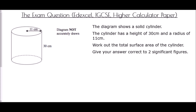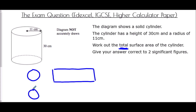We finish with an exam question from the Edexcel iGCSE Higher calculator paper: a solid cylinder has a height of 30 centimeters and a radius of 11 centimeters — work out the total surface area, correct to two significant figures. The word 'total' is important: it means the circle at the top, the rectangle around the outside, and the circle at the bottom. Each circle is pi times 11 squared, which is 121 pi.